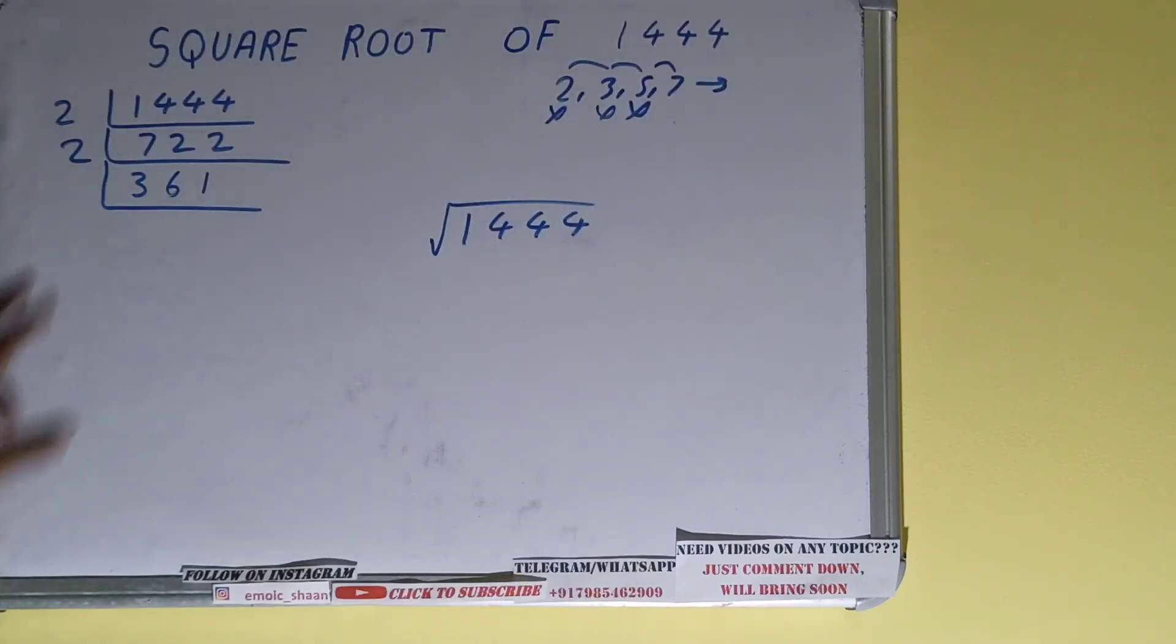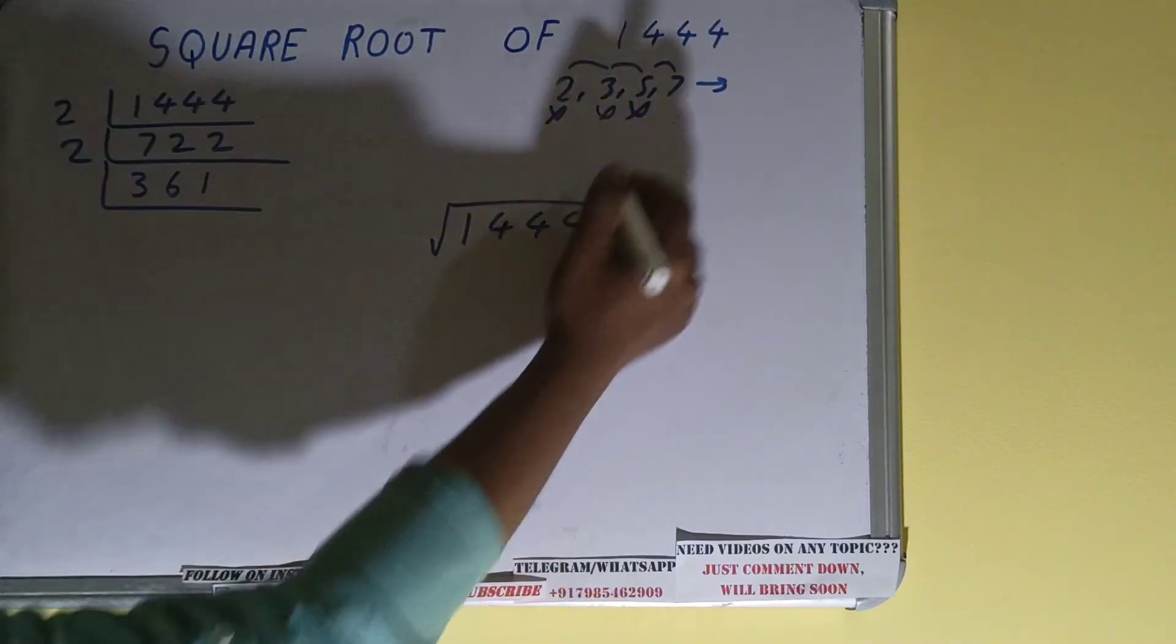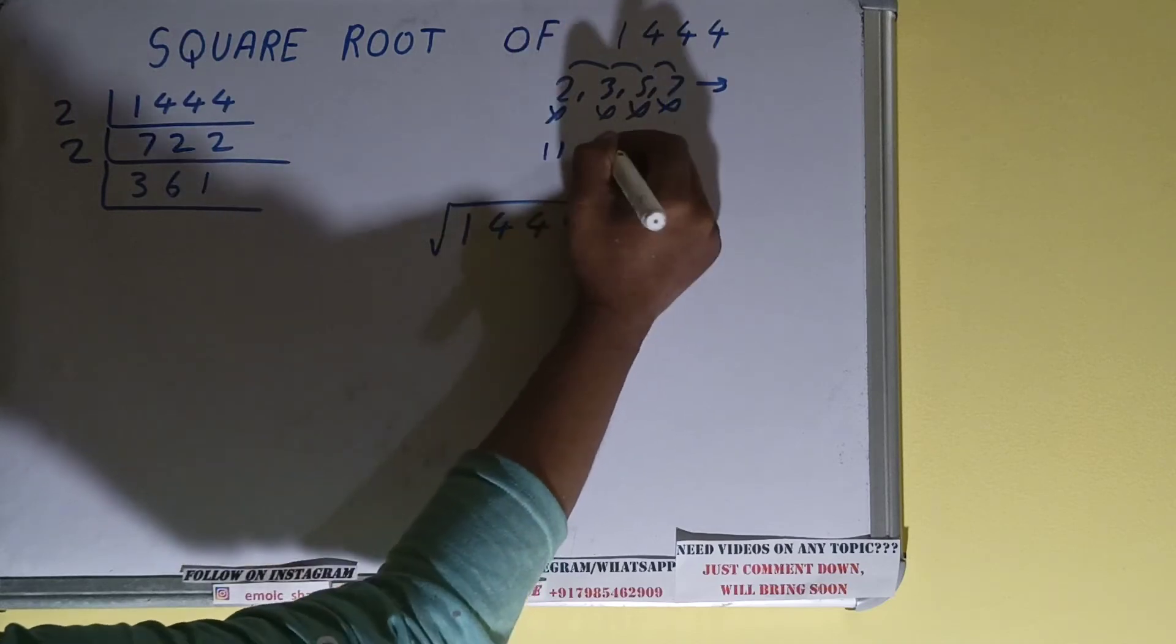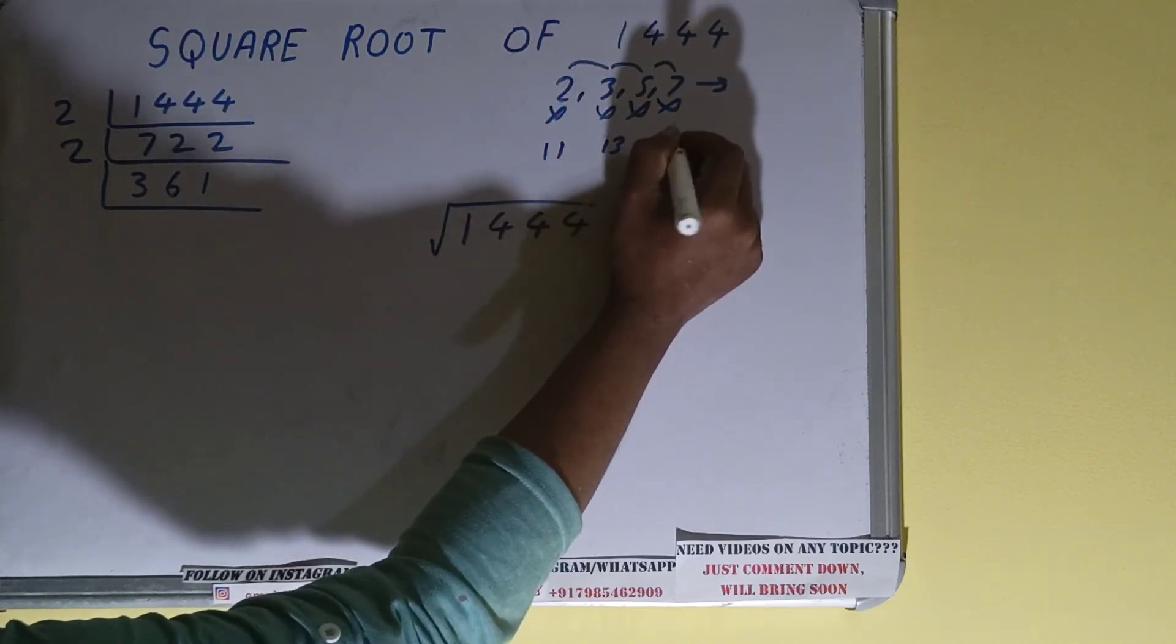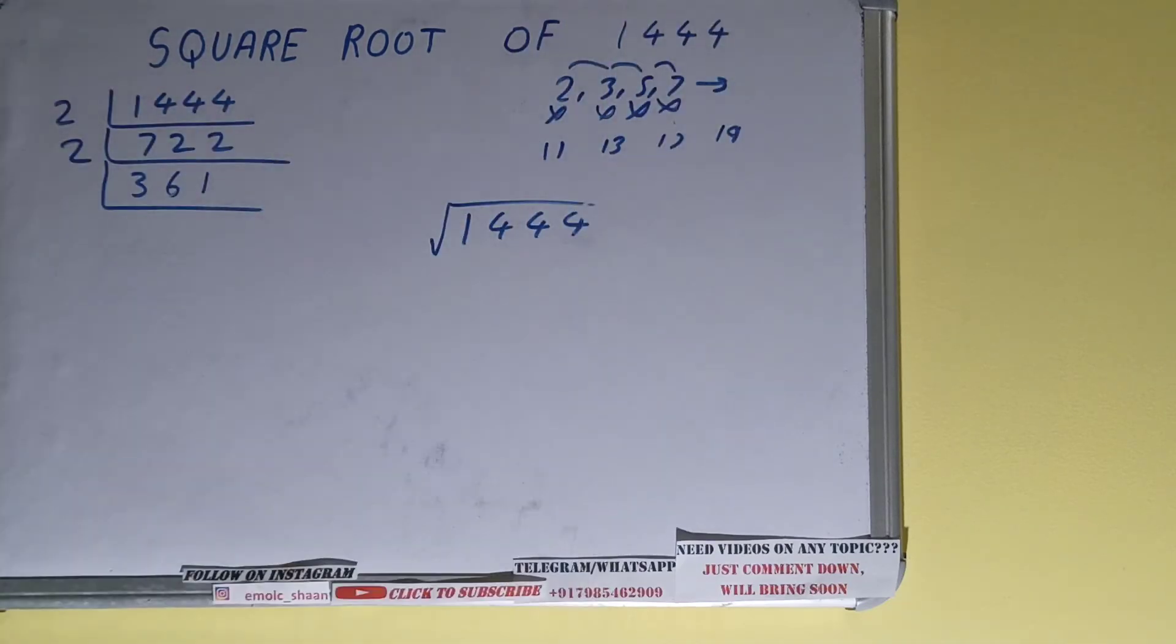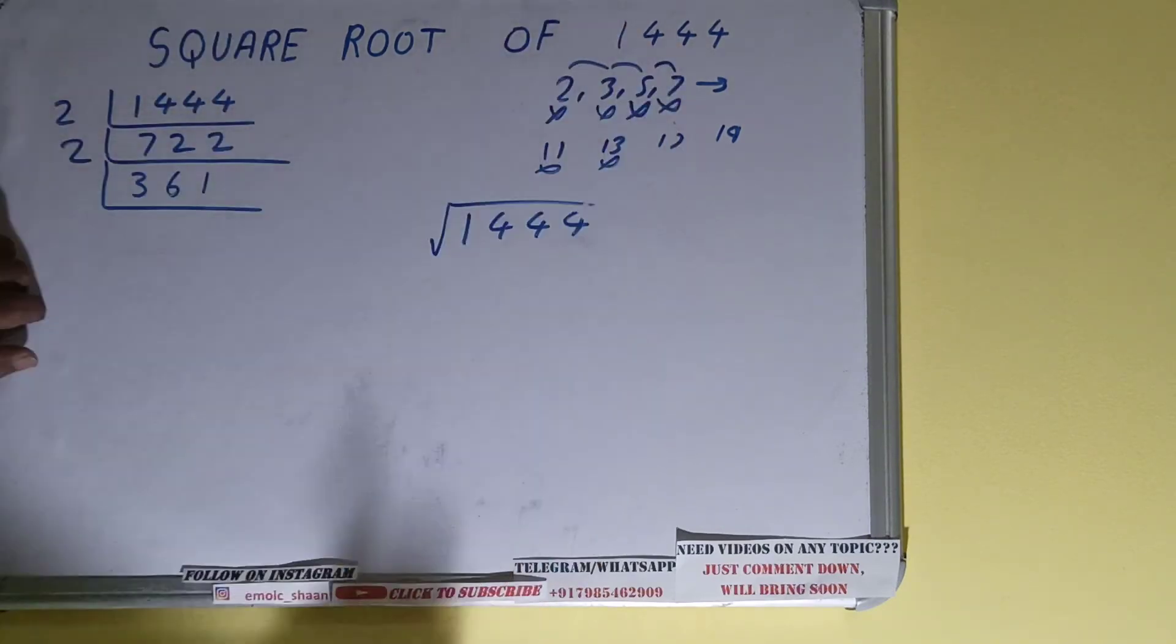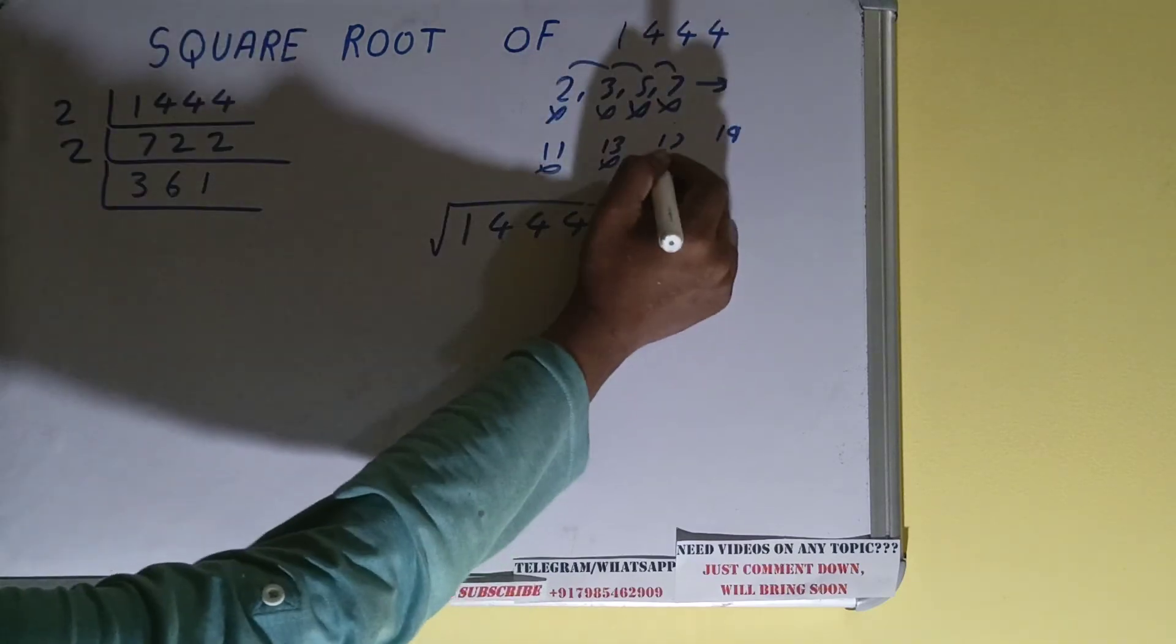Let's check with 11, 13, 17, and 19. So 11 threes are 33, 31, not divisible. Let's check with 13: 13 twos are 26, 101, not divisible. Let's check with 17: 17 twos are 34, 21, not divisible. Let's check with 19.